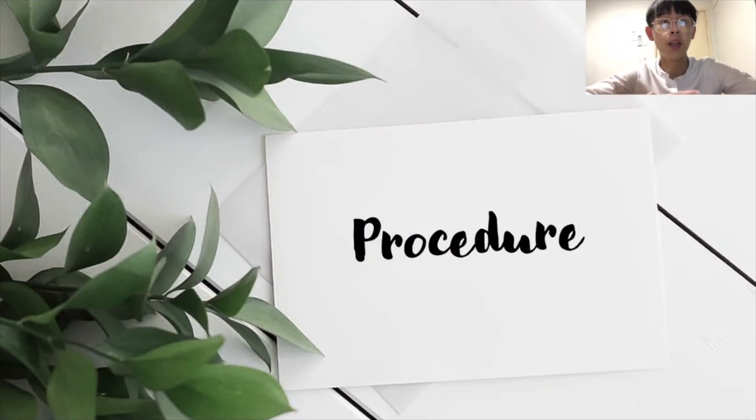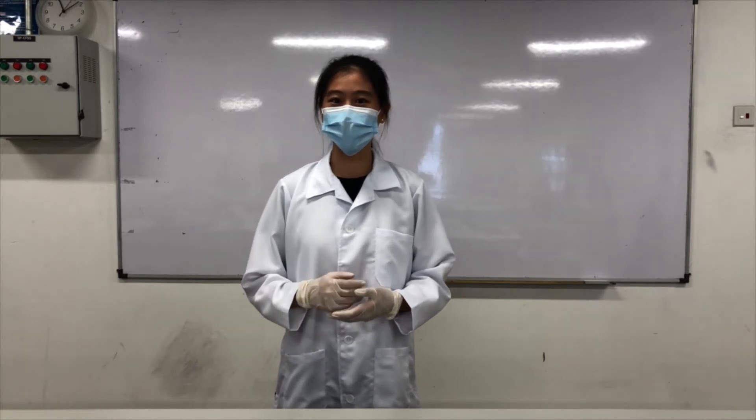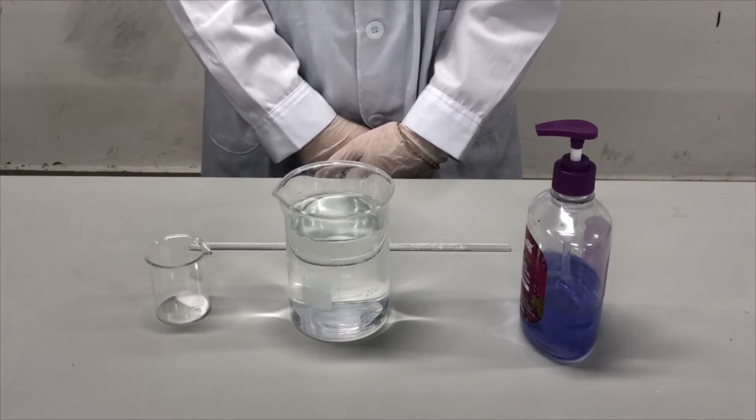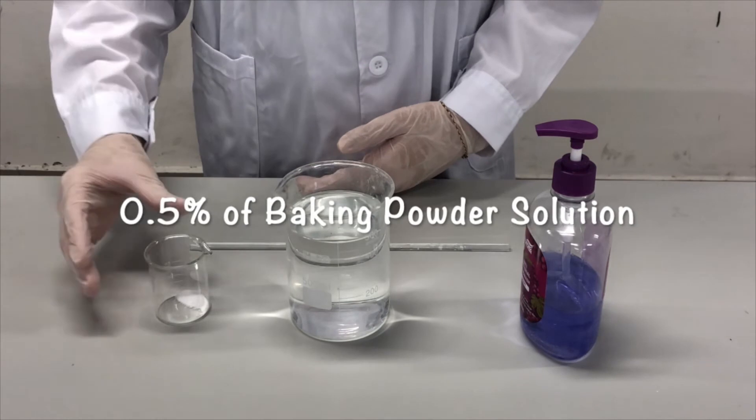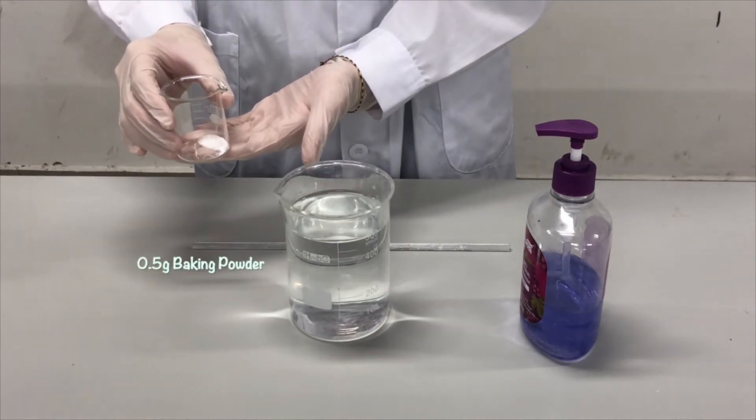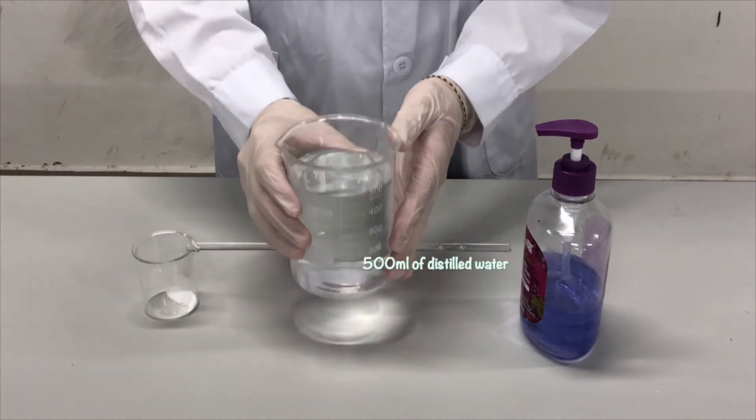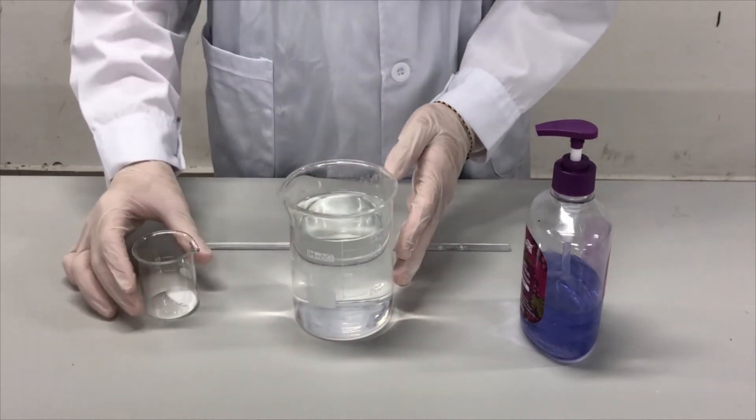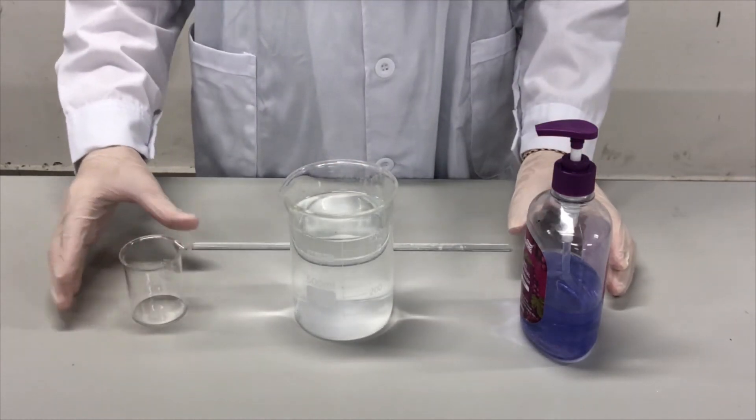Now, I will let my teammate Lowena to proceed the presentation with the procedure in this experiment. Hi, I'm Lowena, and I will be presenting the procedure of this experiment. To start this experiment, we will have to make a 0.5% of baking powder solution by mixing 0.5g of baking powder with 500ml of distilled water.